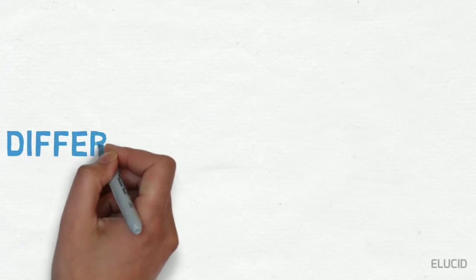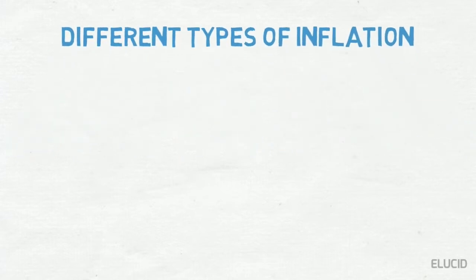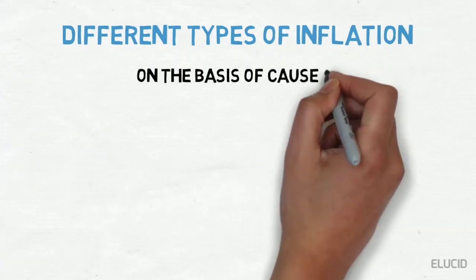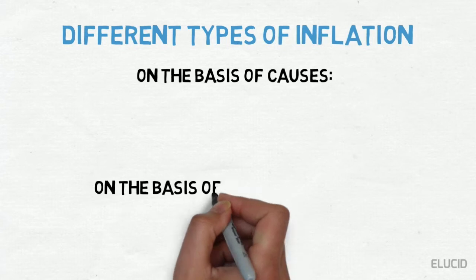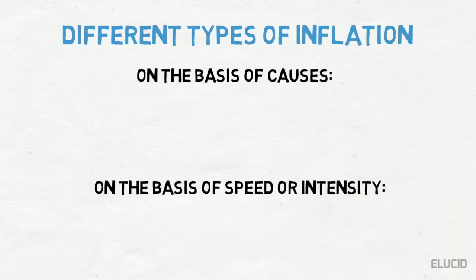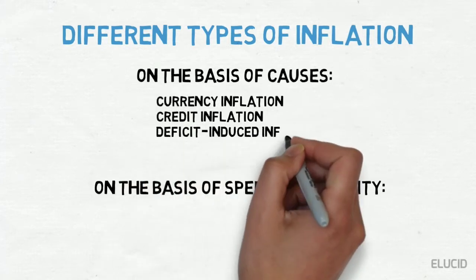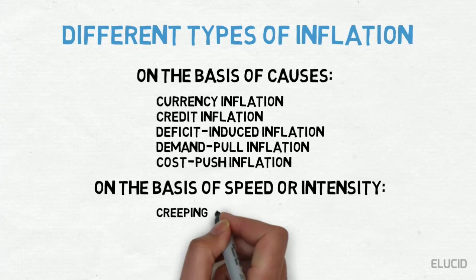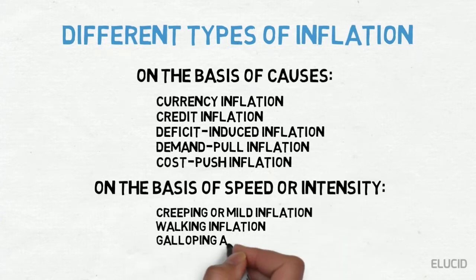One may observe different types of inflation in the contemporary society. They are classified on the basis of causes and on the basis of speed or intensity. These include currency inflation, credit inflation, deficit-induced inflation, demand-pull inflation, cost-push inflation, creeping or mild inflation, walking inflation, galloping and hyperinflation.